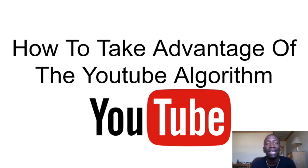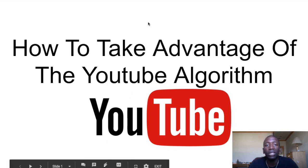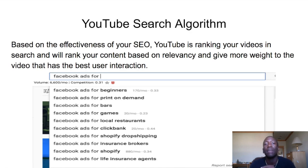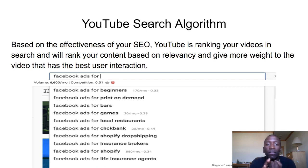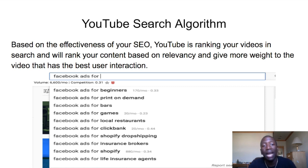The first algorithm is called the YouTube search algorithm. This is based on the effectiveness of your SEO — search engine optimization — meaning do you have your title as that keyword phrase, do you have that keyword phrase in your description, and do you also have that keyword phrase within your tags?